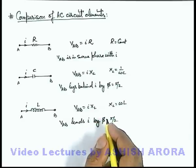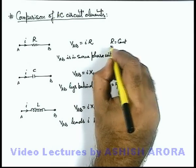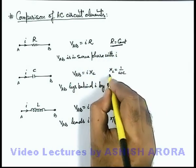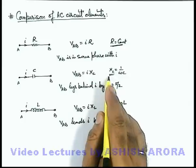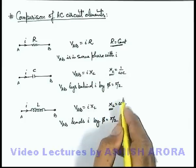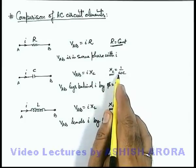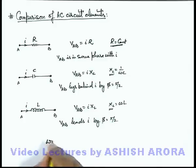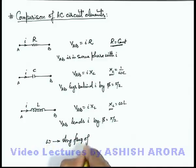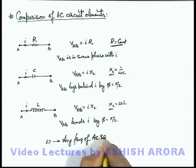Now here we can see the value of resistance always remains constant, but the value of reactance, whether it is capacitive or inductive, depends on the value of ω, which is the angular frequency of AC source. This is the frequency at which the alternating current is being generated.